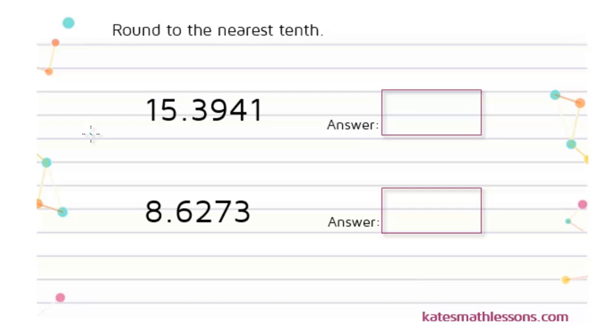In this problem we've been asked to round these two numbers to the nearest tenth. Whenever you're rounding you want to start by finding the number that's in the spot you need to round to.